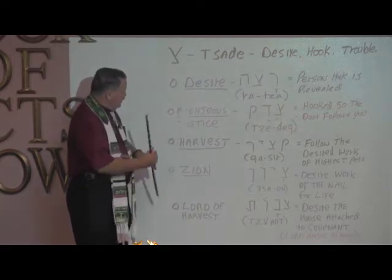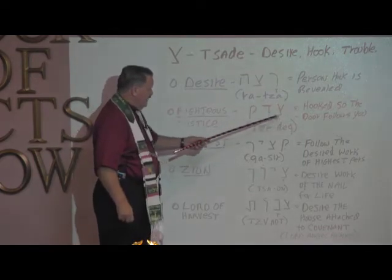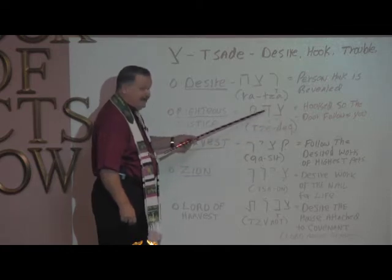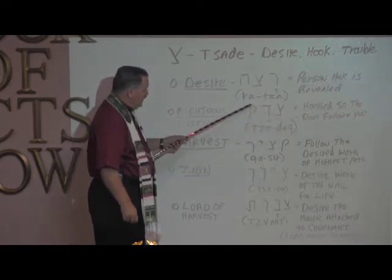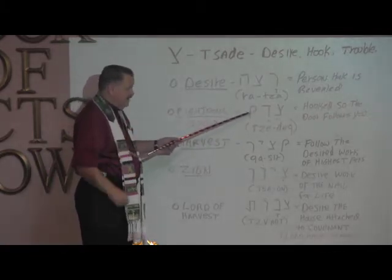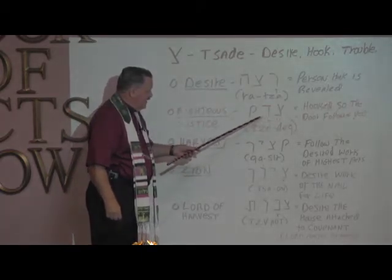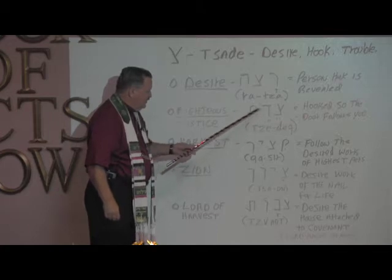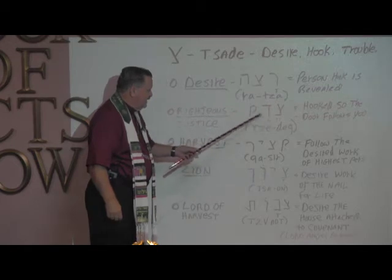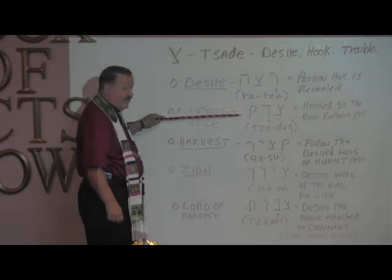The next word is 'righteous.' Reading right to left, we have the TZ sound, then the Dalet with a D sound, and this looks like a P but it's Kuf with a Q sound. Put together: Tzadeq — T-Z-E-D-E-Q, pronounced Tzadik. It has to do with being righteous or righteousness.